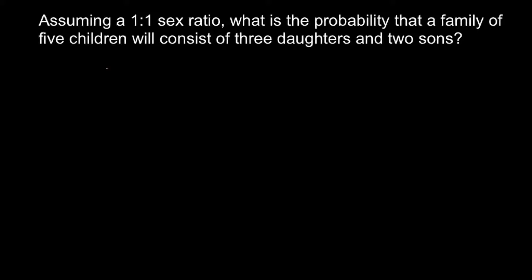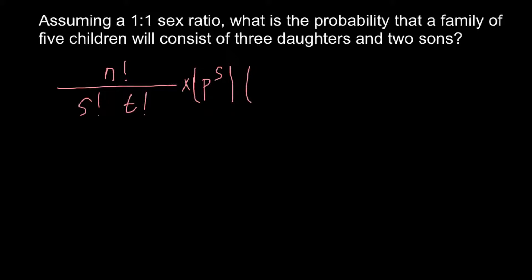Here is the formula we are going to use today. N stands for the total number — today we have five children — divided by S and T, where S stands for the number of girls and T for the number of boys, multiplied by the probability of girls, which is P raised to S, and multiplied by the probability of boys, which is Q raised to T.